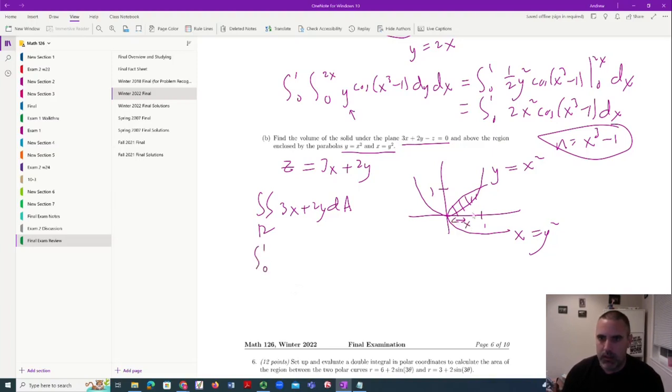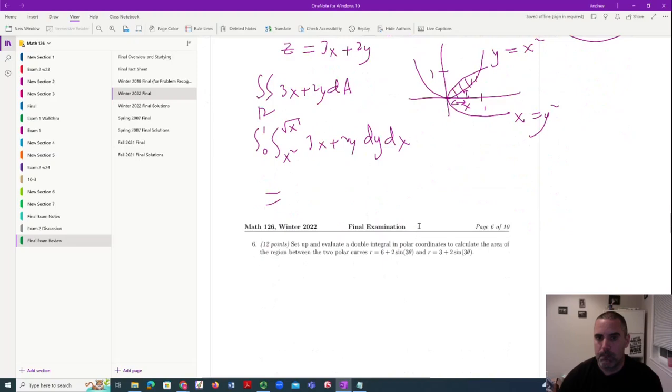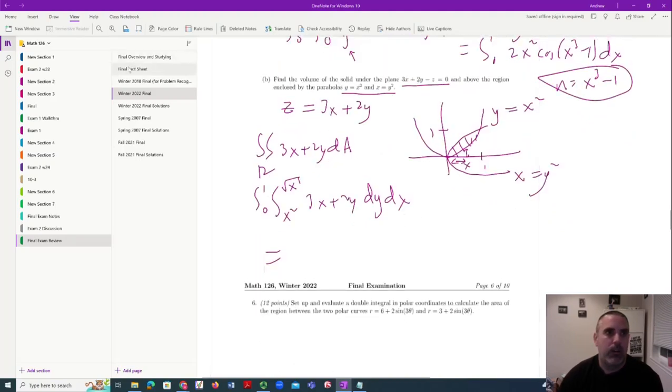There's multiple ways to set this up. But if I was doing, I probably would do 0 to 1. Let's use x. And then what's the bottom? So in terms of x, what's the top? So x² is on the bottom. The top is the square root of x. 3x plus 2y dy dx. And the rest is computation. You don't have to practice computation, but there's the main idea.